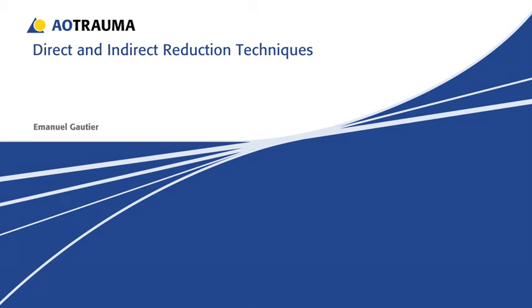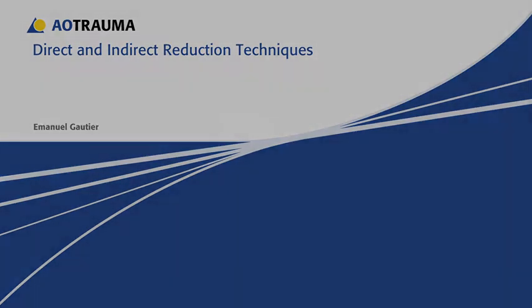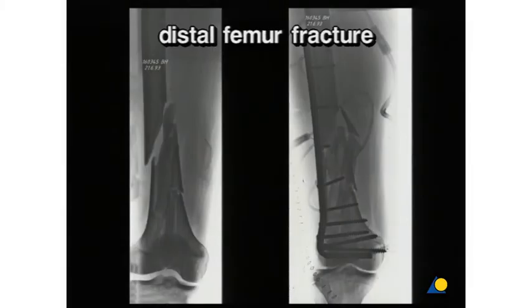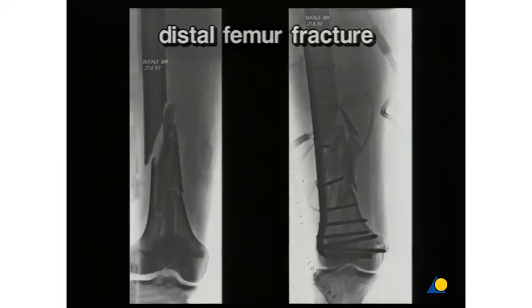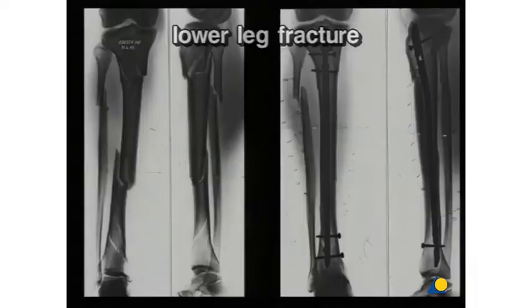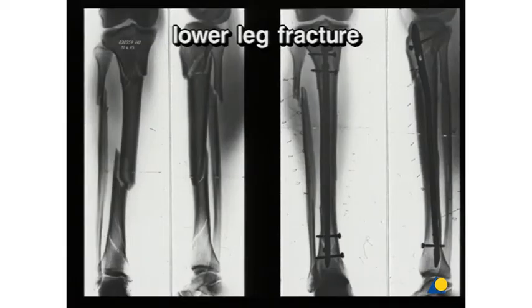Direct and indirect reduction techniques. We differentiate between direct and indirect reduction techniques. With the direct technique, the fracture is exposed, the reduction instruments remain visible when inserted into or near the fracture zone, and the result of the reduction can be examined visually.